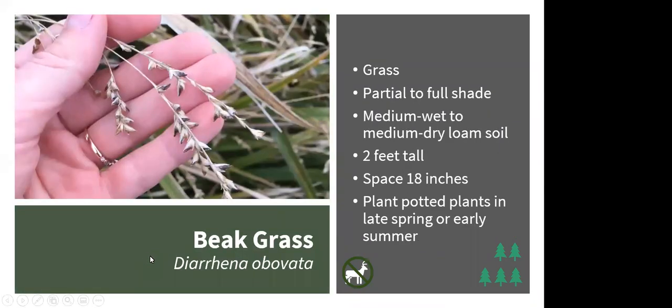Beak grass is a great choice for a lower-growing spreading grass, doing well in part to full shade in medium-wet to medium-dry loamy soil. It spreads through creeping rhizomes, and its leaves and seeds bend over to the side. It's deer resistant and notably resistant to juglone produced by black walnut trees — so if you need something to plant under a walnut tree, beak grass is worth trying. Leaves turn tan in fall. Choose a potted plant and plant in late spring or early summer.